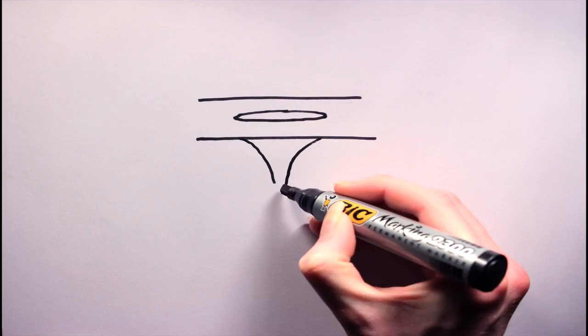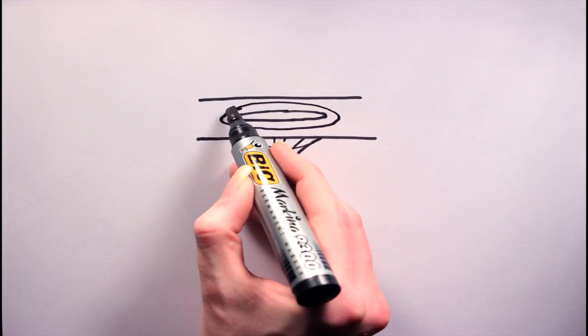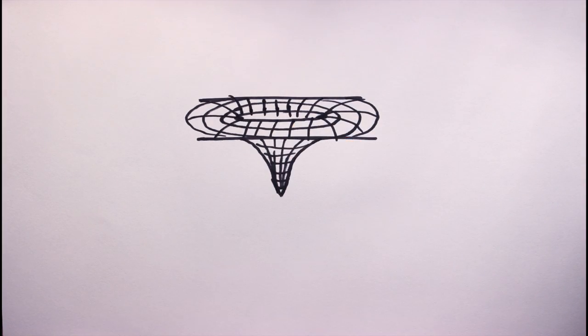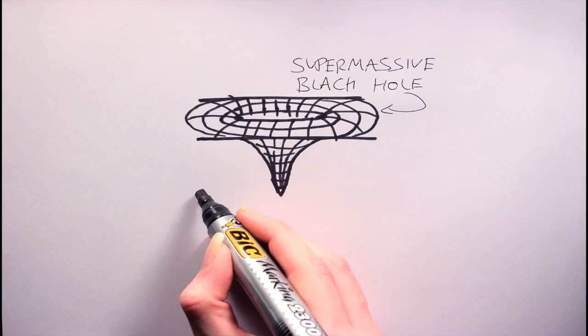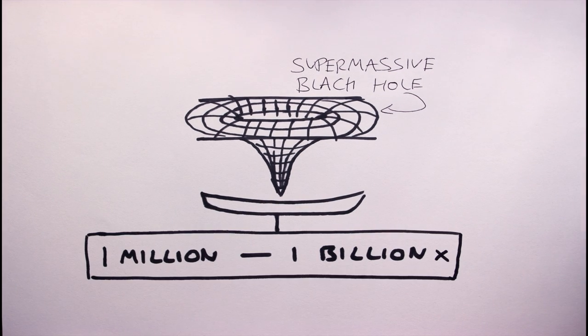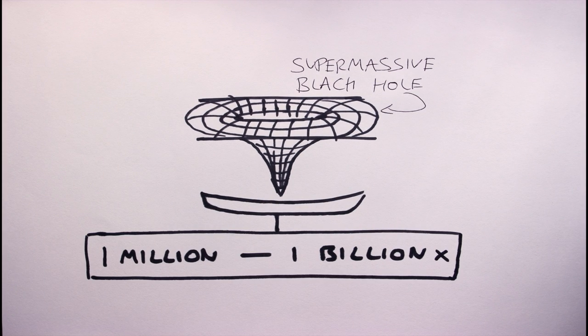As mentioned before, the central region, or bulge, hosts the supermassive black hole. A galactic supermassive black hole can have a mass of anywhere between a million and several billion solar masses.